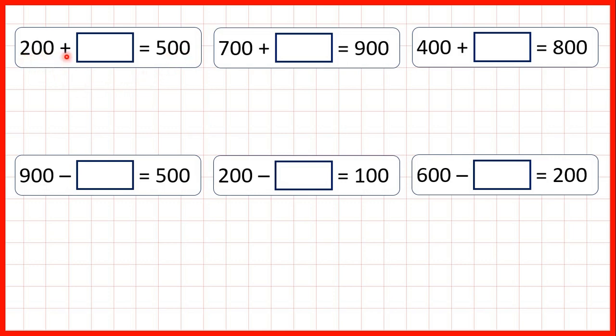First, 200 plus something equals 500. So we can see that we don't have any tens or ones, and whenever we have a missing number in an addition, we always use subtraction to find our missing number.